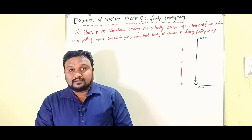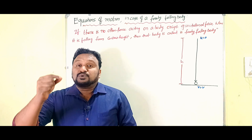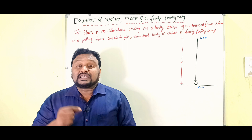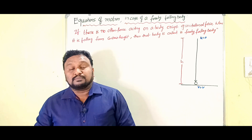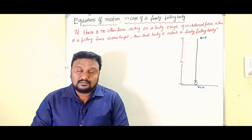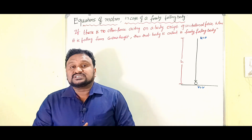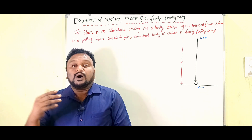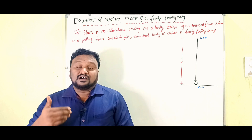There is no external force acting on the body except the gravitational force. Then that body is called a freely falling body. Now, in this case of a freely falling body, how are the equations of motion going to change?